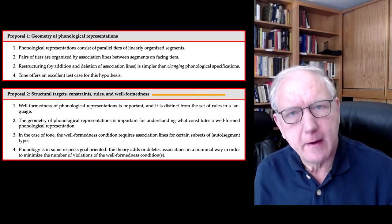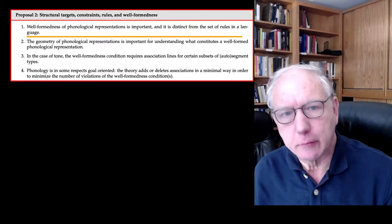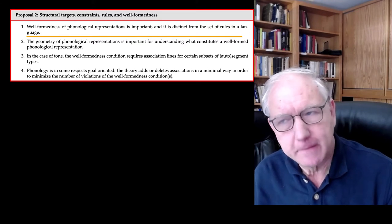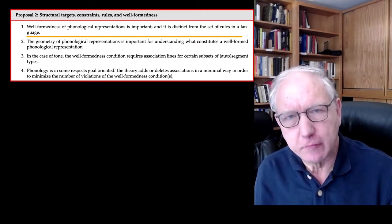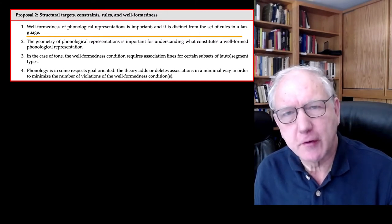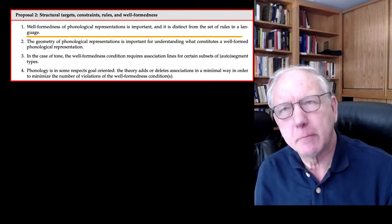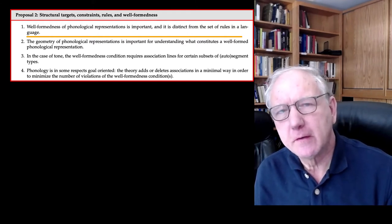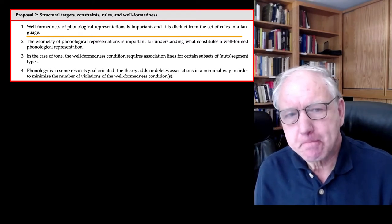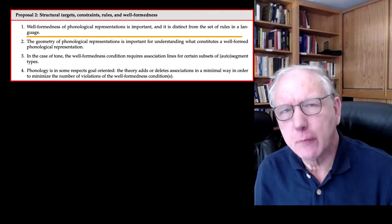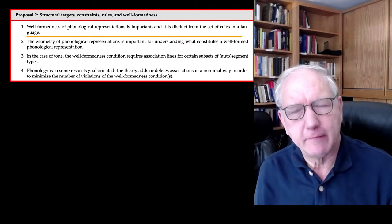The first proposal here was that well-formedness of a phonological representation is an important question, and it's distinct from the set of rules in a language. That was an innovative notion in the context of generative phonology — there really wasn't such a thing as a notion of phonological well-formedness. There was exploration of morpheme structure conditions, but that had to do specifically with morphemes and morphophonemic constraints. Another important point about well-formedness is that it's not an all-or-none thing — there are relative levels of how well-formed a representation is.